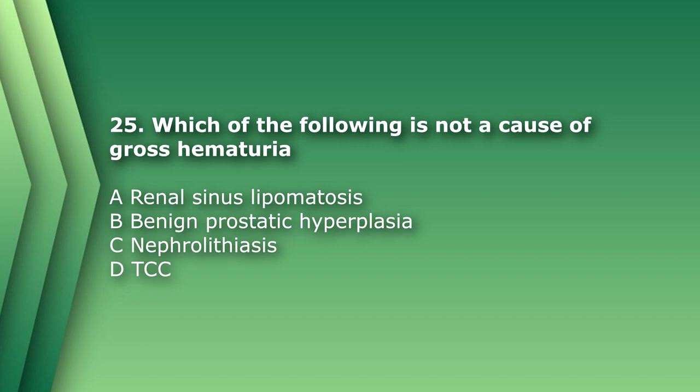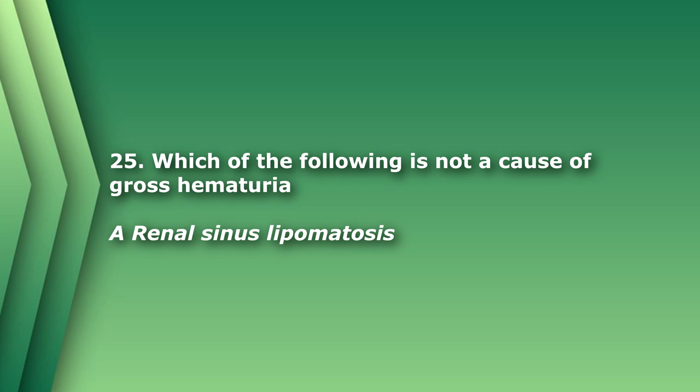Number 25. Which of the following is not a cause of gross hematuria? A. Renal sinus lipomatosis. B. Benign prostatic hyperplasia. C. Nephrolithiasis. D. Transitional cell carcinoma. Answers B through D can present with hematuria. A. Renal sinus lipomatosis is just markedly increased renal sinus fat and is usually asymptomatic.